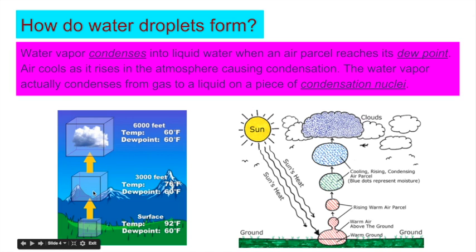As the air rises, pressure reduces. The air parcel expands, its volume increases, its temperature decreases. Moving up further to 6,000 feet, you have the air parcel getting less dense, reaching its dew point temperature, and condensation taking place.